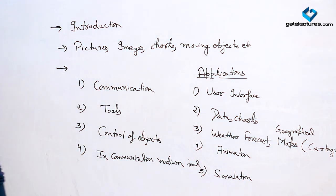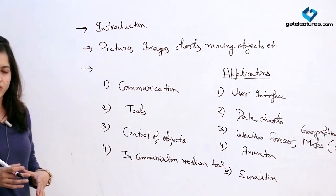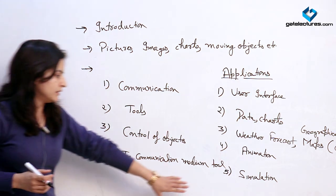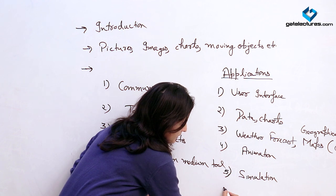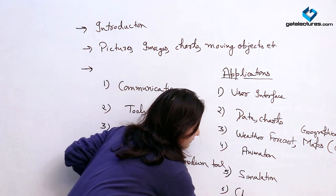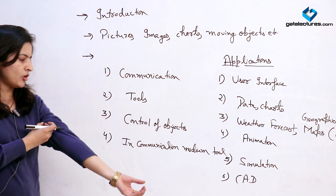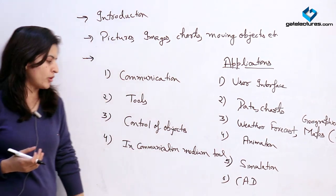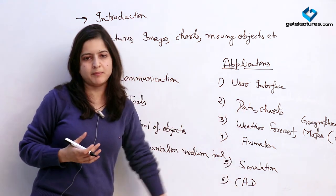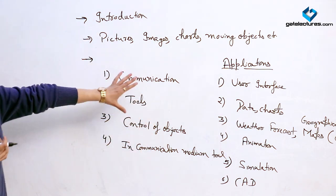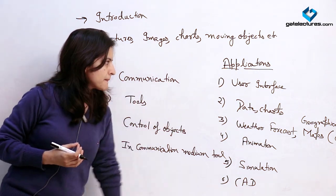Another application is simulation. Simulation is when we are representing some real-time objects — like projects of ISRO and others — to simulate them in an initial form. When we are designing some instruments and others, we can simulate them before processing. Another application is CAD — Computer Aided Design — which is a software used for simulating cars and other objects. It is generally used by mechanical engineers for plotting a car diagram or any object in a software form. These are the basic applications of computer graphics; there are also different areas like entertainment industries.